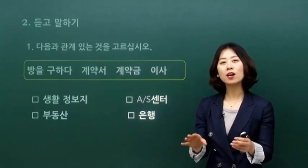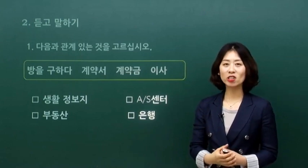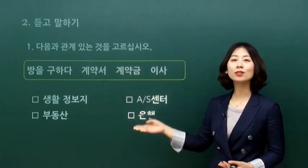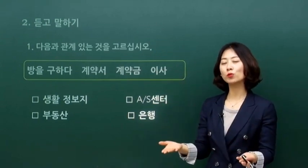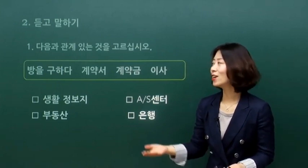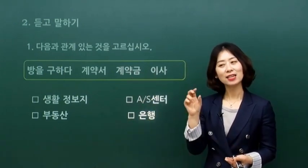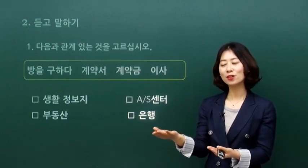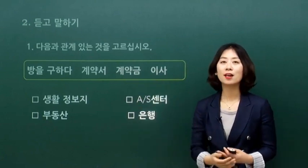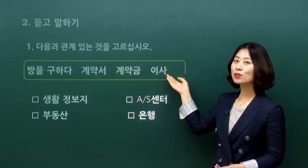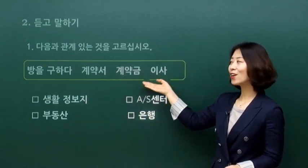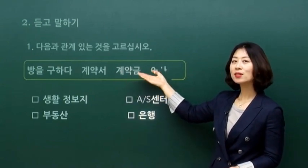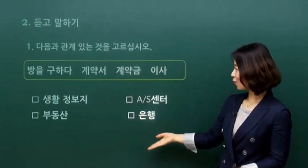계약서는 어떤 계약을 하고 나서 쓰고 사인을 하는 것을 계약서라고 합니다. 계약서를 쓰다, 계약서를 작성하다라고 이야기하고요. 계약서만 쓰고 이사를 안 올 수도 있으니까 계약금이라는 게 있어요. 계약금은 계약을 했을 때 약 10~20%의 금액을 내는 것으로, 이 방에 이사 오겠다는 의사표시입니다. 그 다음에 이사하고 싶은 날짜를 정해서 이사를 합니다. 방을 구하고, 계약서를 쓰고, 계약금을 내고, 날짜를 정해서 이사하는 순서네요.